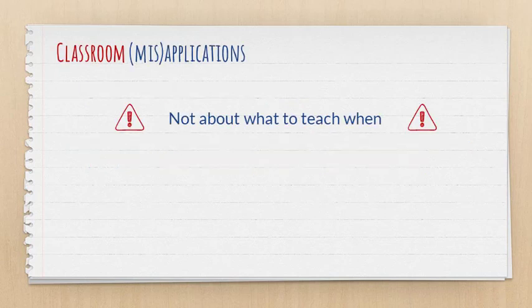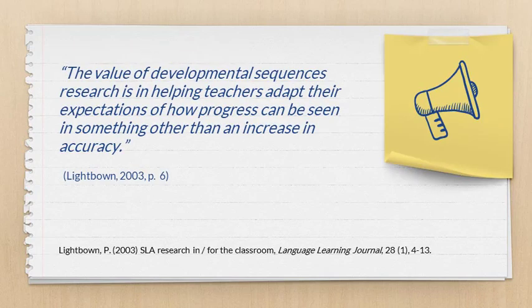The most important pedagogical implication I can give you is that it is not about what to teach when — research on developmental sequences was never meant to be applied that way. So why is this good for educators to know? Because of what Lightbown said in the very first article we unpacked, and it's such a good quote that it's worth repeating: 'The value of developmental sequences research is in helping teachers adapt their expectations of how progress can be seen in something other than an increase in accuracy.'